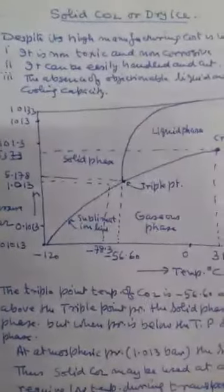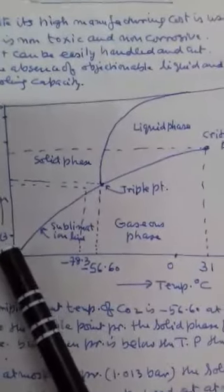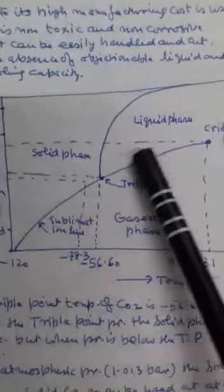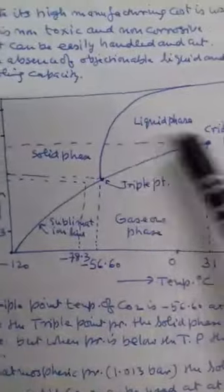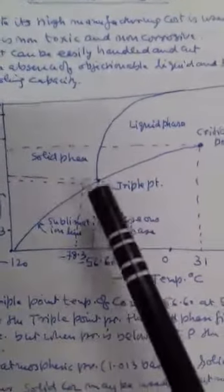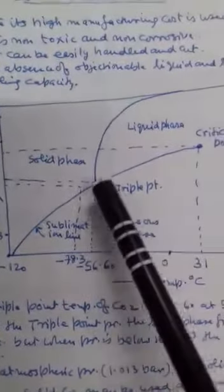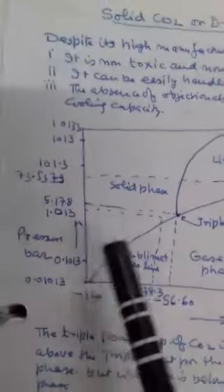Now I'm showing you a diagram between pressure and temperature for solid carbon dioxide. This is the sublimation line here. There is another line here - liquid phase, solid phase, and here is the triple point. This side is gaseous phase. Pressure at one atmospheric pressure is this one.